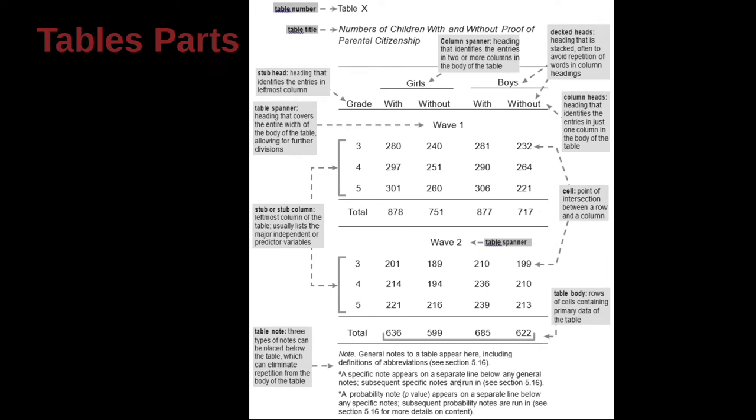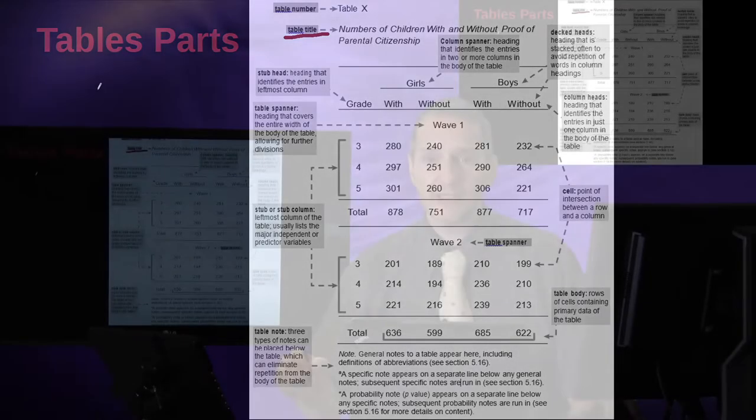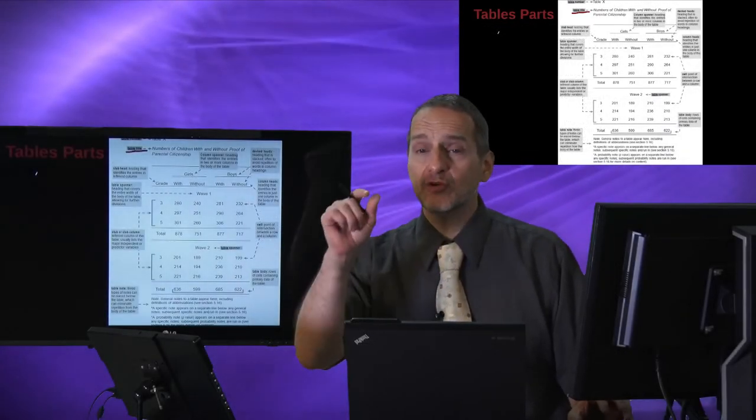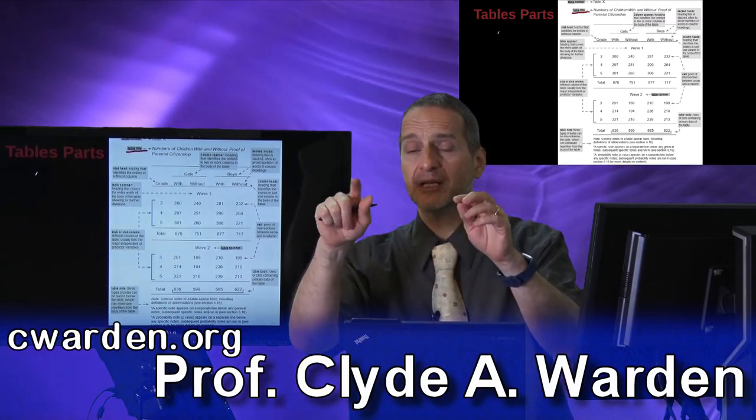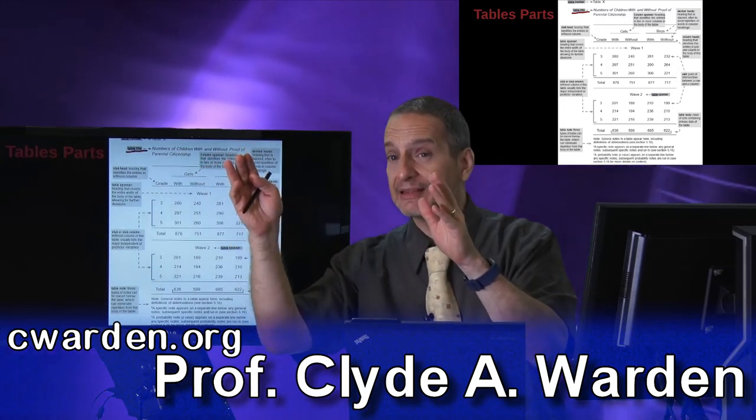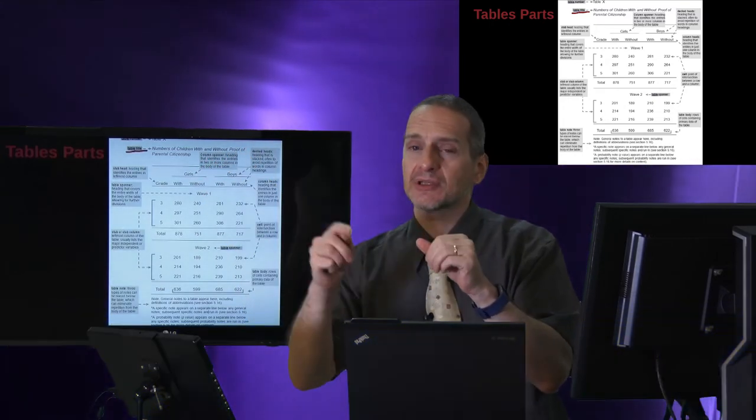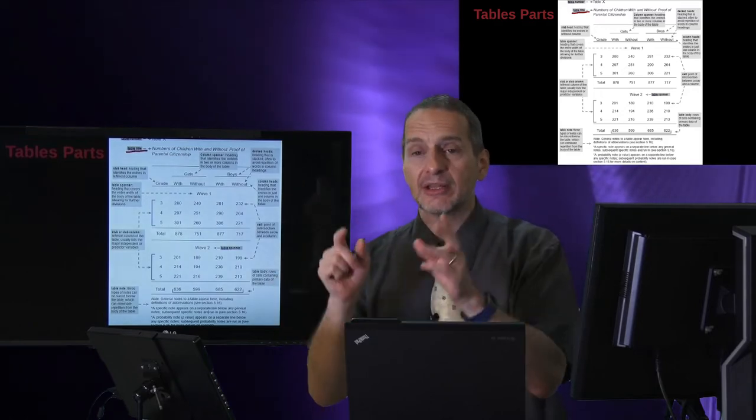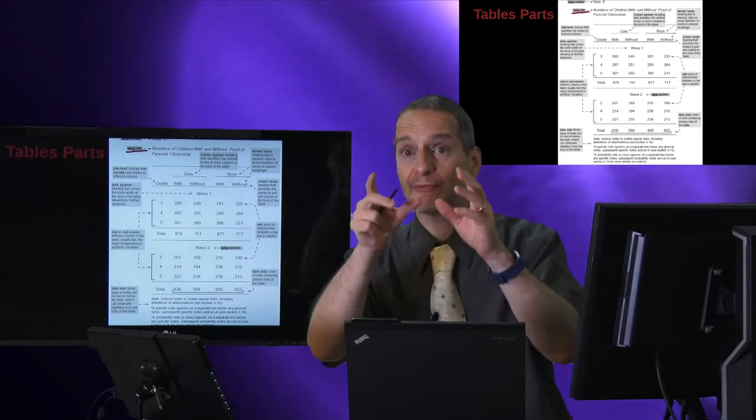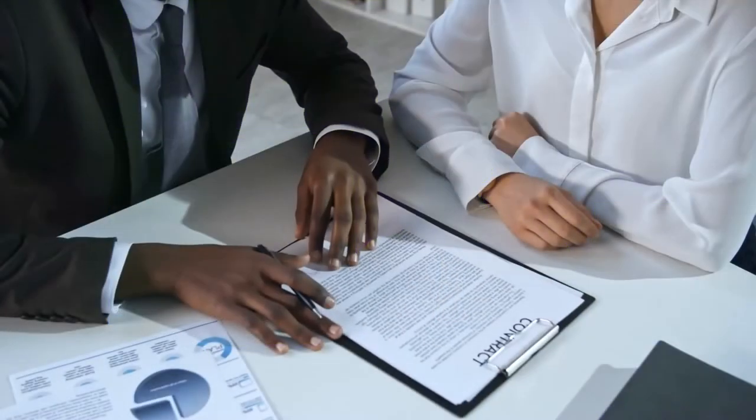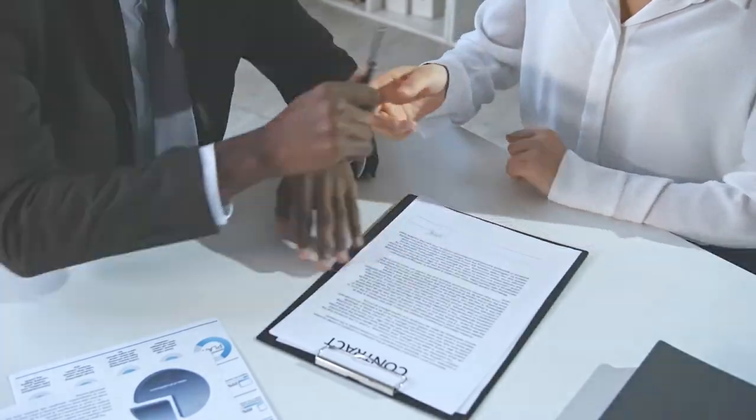What we have is the table number up top here, table X, and then we have the table title. So the title of the table. Now of course when you're writing your research paper or your thesis, you may be used to just saying table one period, and then you go ahead and you write the caption. The caption is not the same idea as the title. The caption is what's going inside the journal as you have the reading flow. But APA is actually asking you to be more formal. They're asking for a table title.